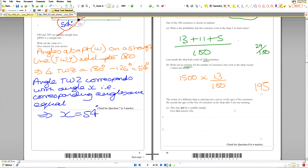The owner of a different shop is carrying out a survey on the ages of his customers. He records the age of the first 10 customers in the shop after 9am one morning. This may not be a suitable sample. Give two reasons why. The first thing that we mentioned last week was if the sample size is too small.